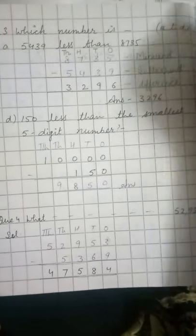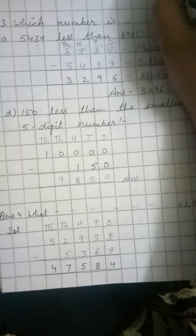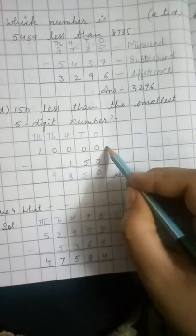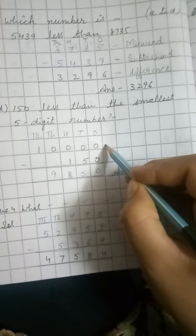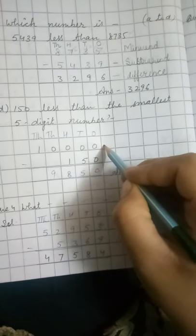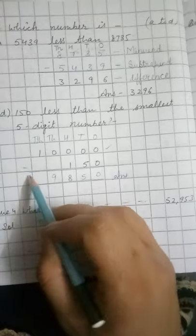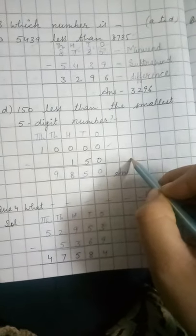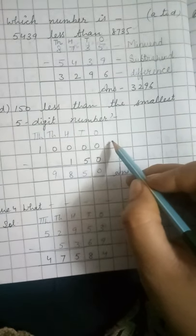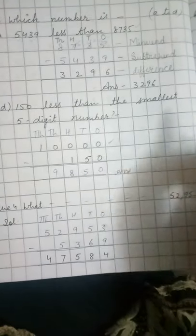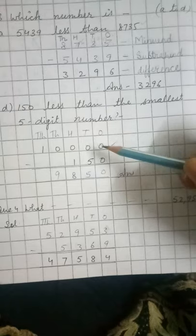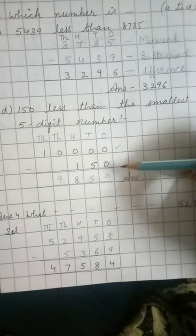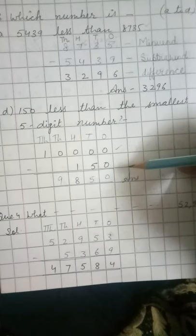150 less than the smallest 5-digit number. We need to know the smallest 5-digit number, which is 10,000 minus 150. We are given the minuend and subtrahend, not directly given but indirectly. Now we will subtract the subtrahend from the minuend.